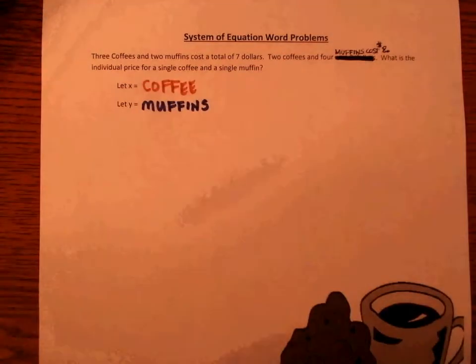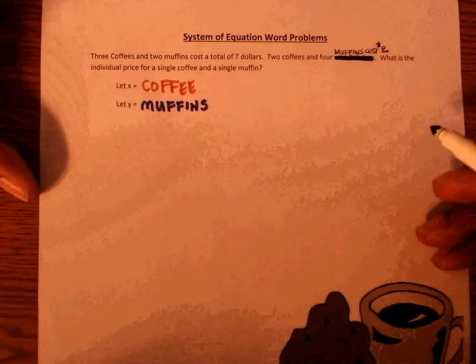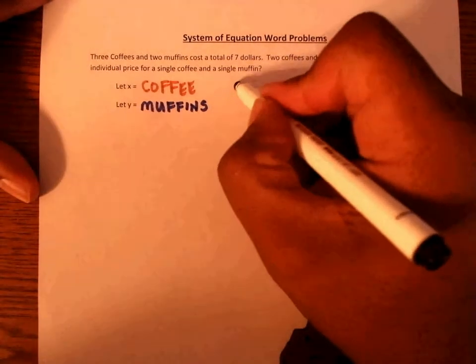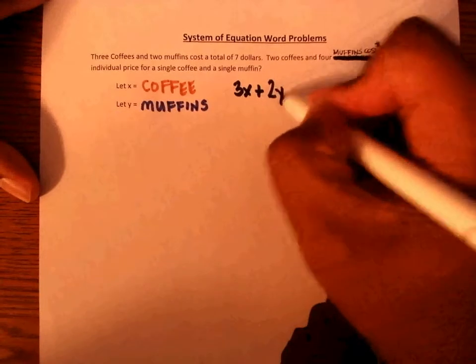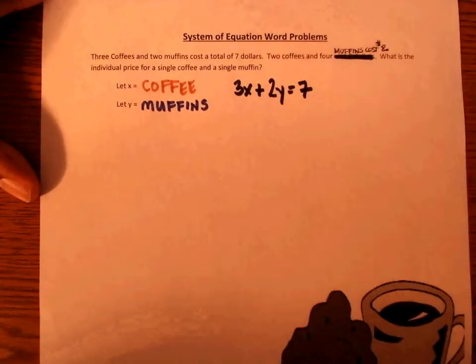We're going to create our equations where three coffees and two muffins cost seven dollars. So we have 3X plus 2Y equals 7.